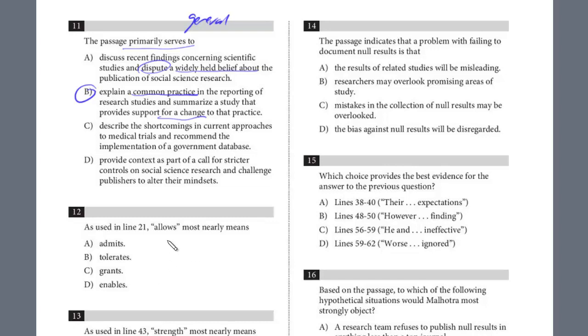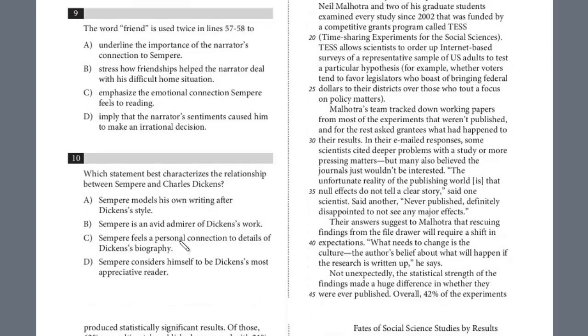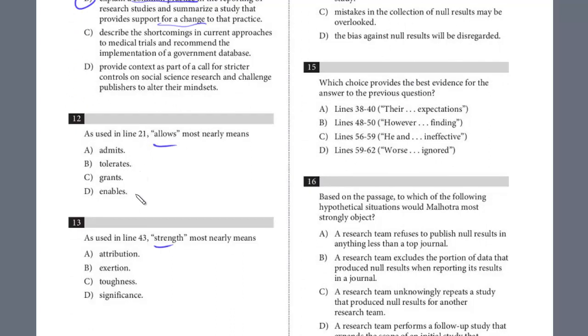It looks like 12 and 13 are both word in context. We're always going to look at the word, try to predict it, and then return to see if your answer matches. Especially with allow and strength, these are pretty common, easy words. It's going to be usually the secondary meaning of the word. So 12, we're looking for what allows means in the context of the passage. Time-sharing experiments for the social sciences, TESS, allows scientists to order up internet-based surveys of a representative sample of U.S. adults to test a particular hypothesis. It allows, in this case, you should recognize, it gives the ability. That's really the prediction. So let's see which one is closest to that. Admits, tolerates, grants—it definitely enables, right? It gives the ability and allows them to do that. So D for this one.